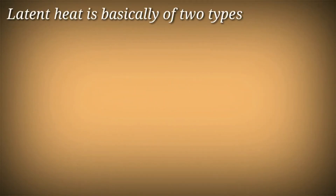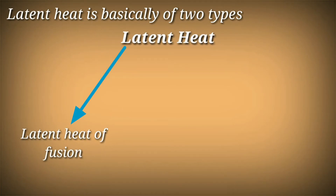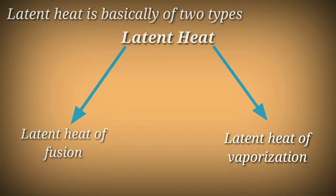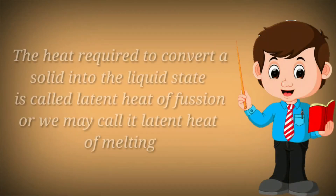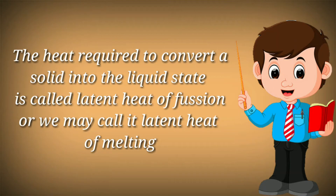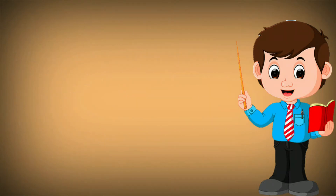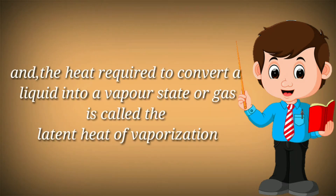Latent heat is basically of two types: latent heat of fusion and latent heat of vaporization. The heat required to convert a solid into the liquid state is called latent heat of fusion or latent heat of melting. And the heat required to convert a liquid into a vapor state or gas is called latent heat of vaporization.